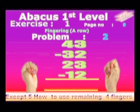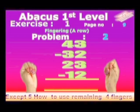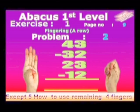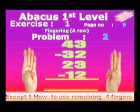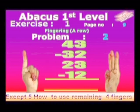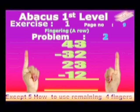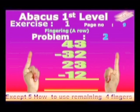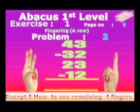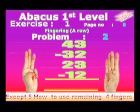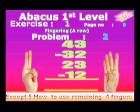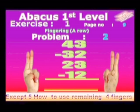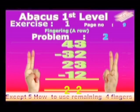Problem no. 2. Take 43: 4 in left hand and 3 in right hand. Minus 32: 3 in left hand and 2 in right hand. Add 23: 2 in left hand and 3 in right hand. Answer is 22.